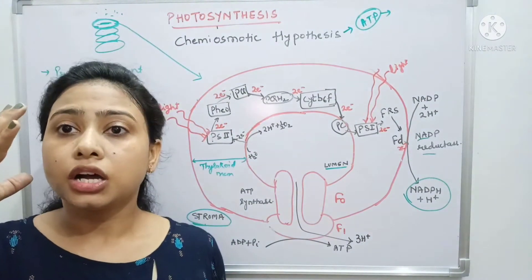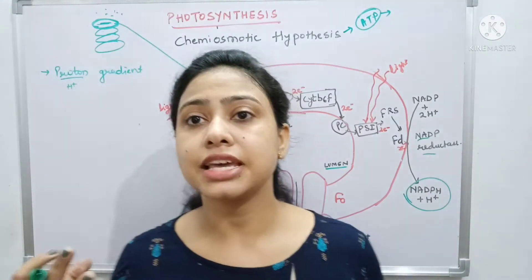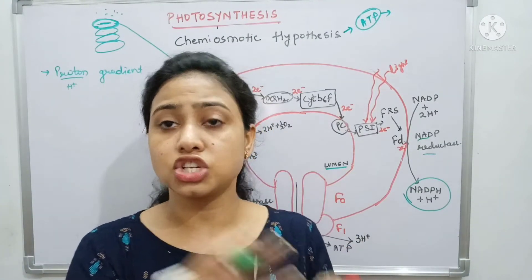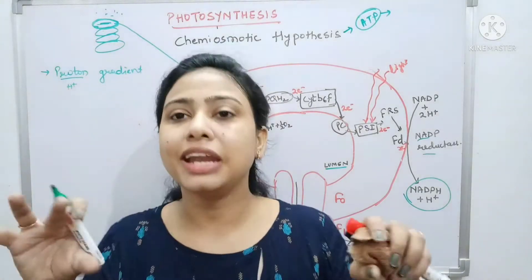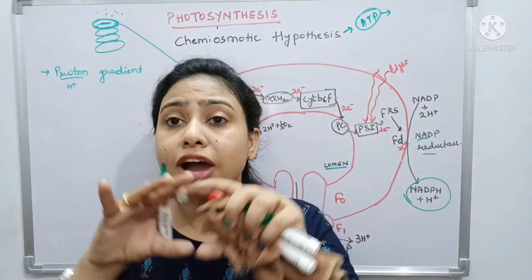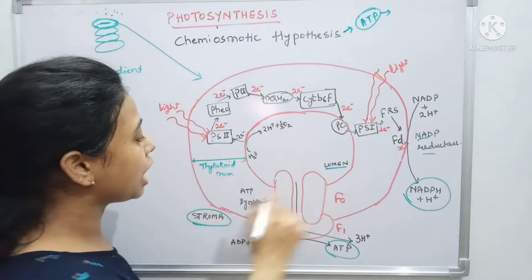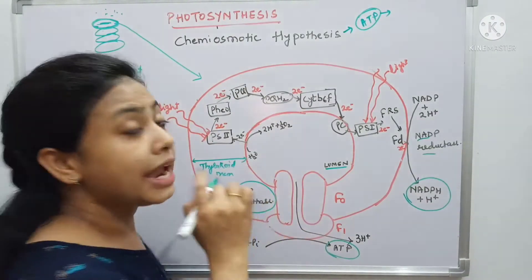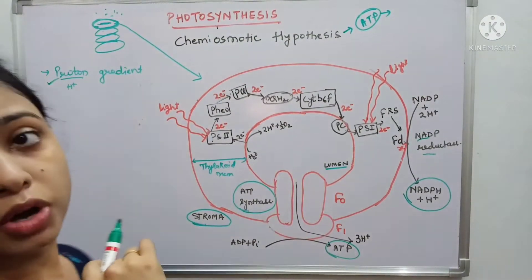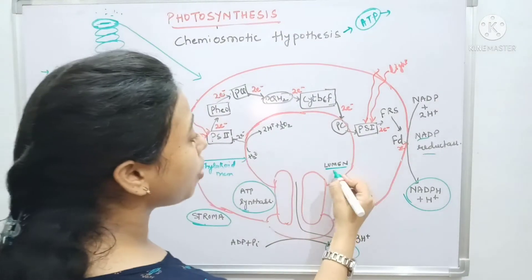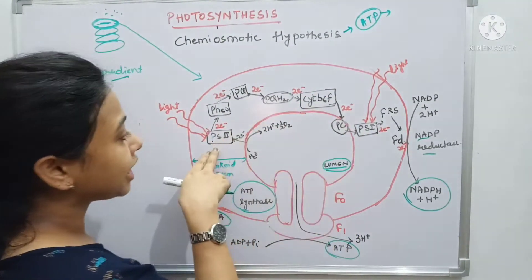Because of this proton gradient, the balance has to be maintained. We cannot leave the cell with high hydrogen ion concentration on one side and very low concentration on the other side. While maintaining this equilibrium, ATP formation occurs with the help of a complex called ATP synthase. Let's look at why this proton gradient forms — it forms in the lumen region.